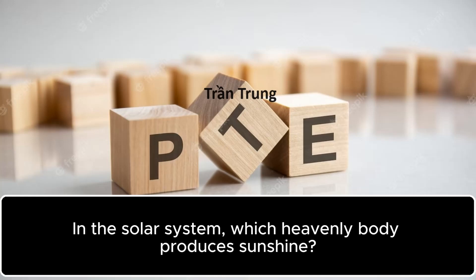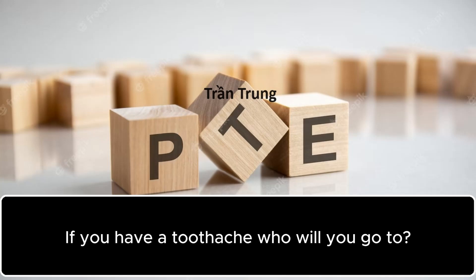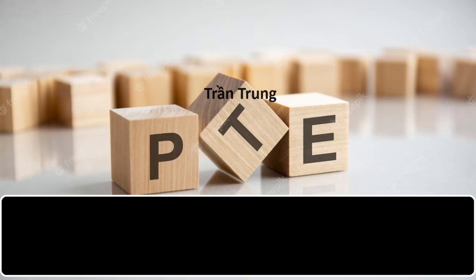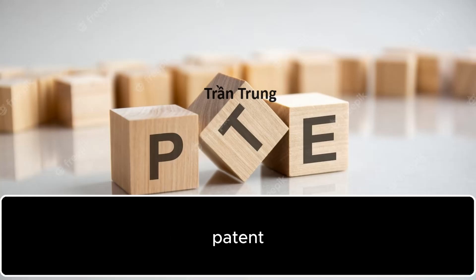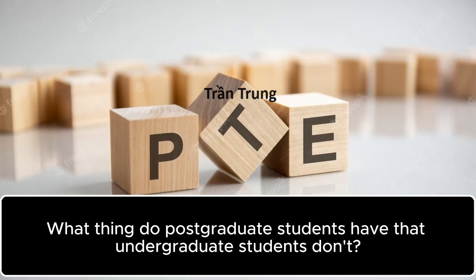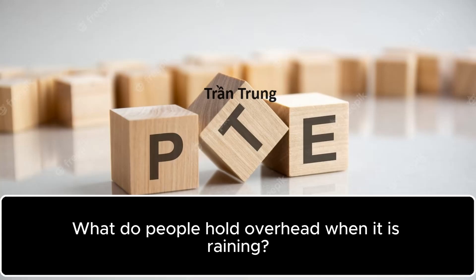In the solar system, which heavenly body produces sunshine? The Sun. If you have a toothache, who will you go to? Dentist. What is the legal document protecting someone's intellectual property? Patent. What thing do post-graduate students have that undergraduate students don't? A bachelor's degree. What do people hold overhead when it is raining? Umbrella.